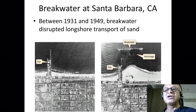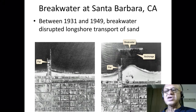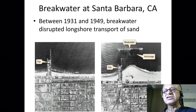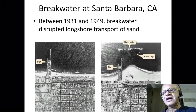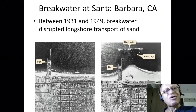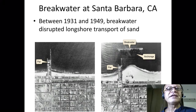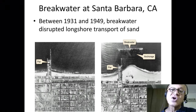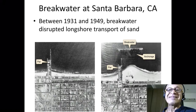Another Santa Barbara breakwater example was built between 1931 and 1949. It disrupted longshore transport of sand, and while they figured out how to pump sand around it, the 1983 storm wiped it out. What was special about 1983? The 1982–83 event was a massive El Niño, so the winter storm that destroyed the breakwater was almost certainly related to that El Niño.